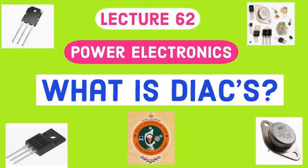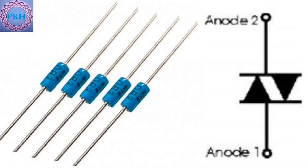No external trigger: the DIAC does not require an external gate to trigger it — only the voltage across its terminals matters. This automatic switching behavior and symmetry make the DIAC an essential component in AC power control applications, especially for triggering devices like TRIACs in dimmers and motor speed control circuits.